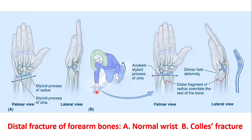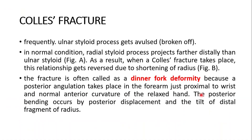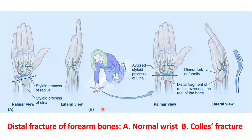This is a fall on the outstretched hand that will result in the Colles' fracture. In this palmar view, you can see that the styloid process of the radius is no longer projecting more distally than that of the ulna. The fracture is often called a dinner fork deformity because the posterior angulation takes place in the forearm just proximal to the wrist, with posterior displacement and tilt of the distal fragment of the radius.